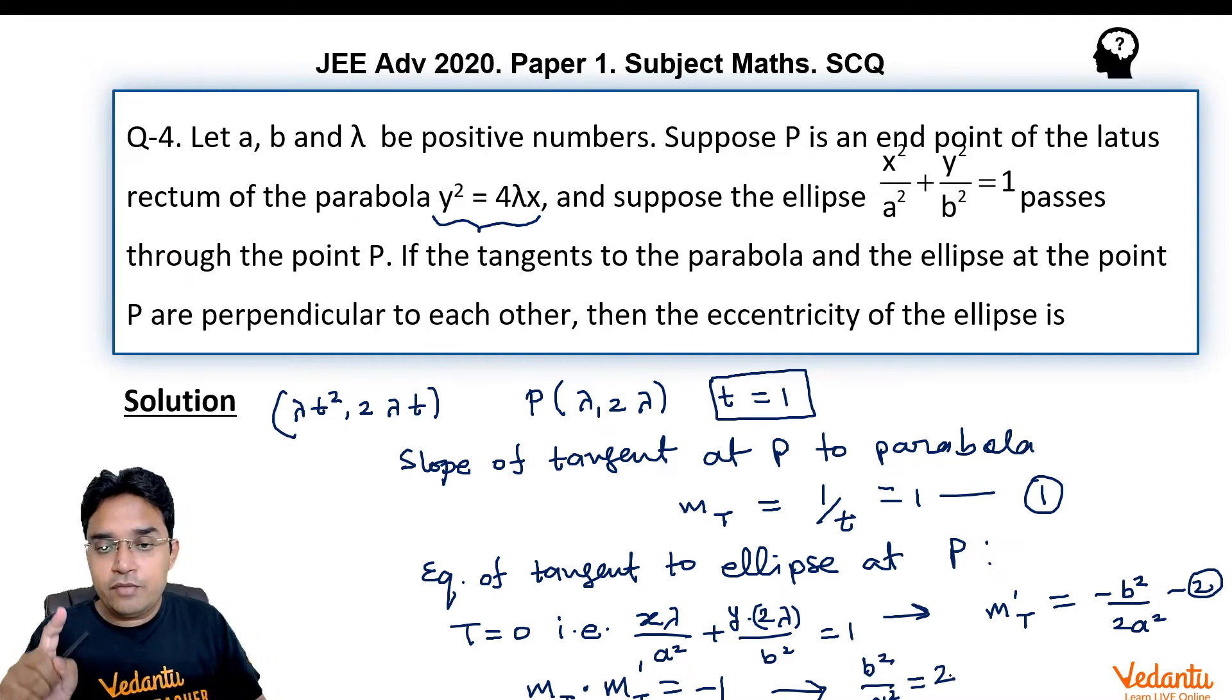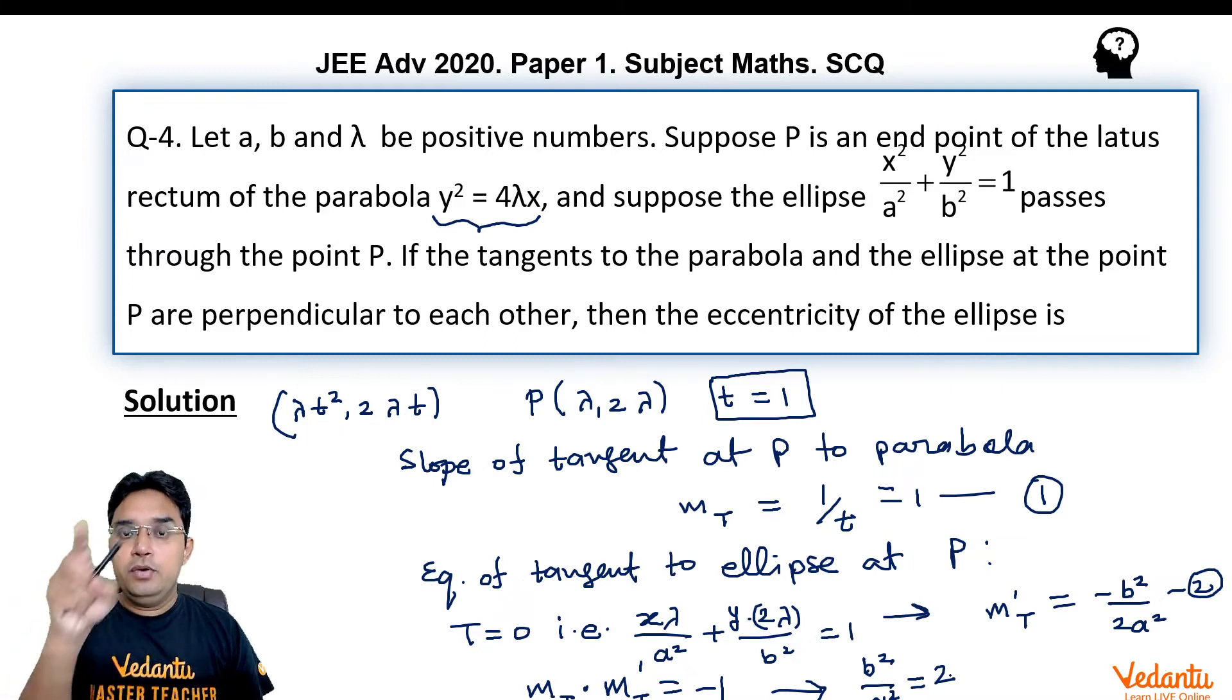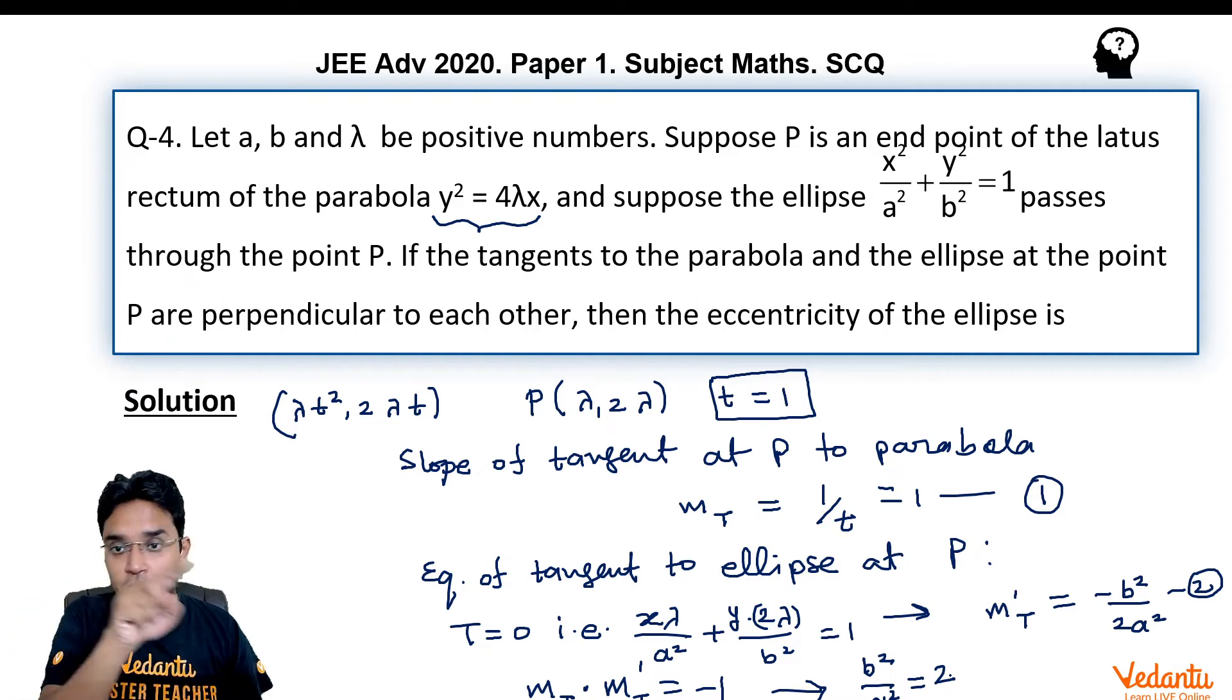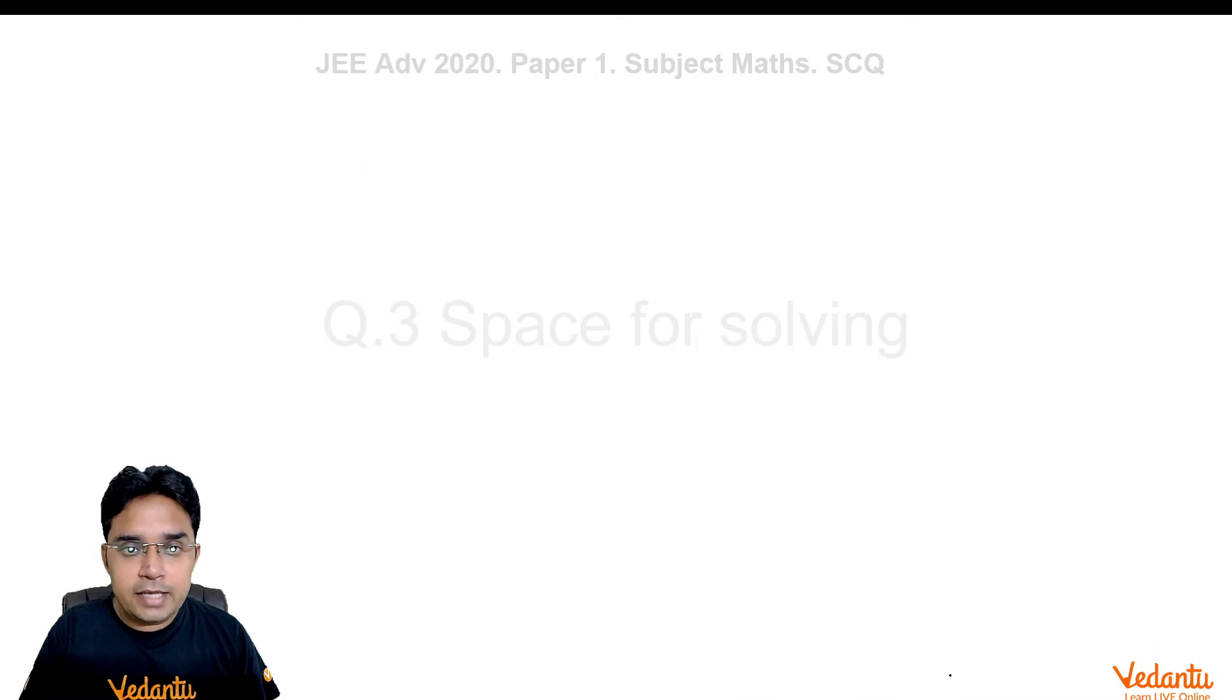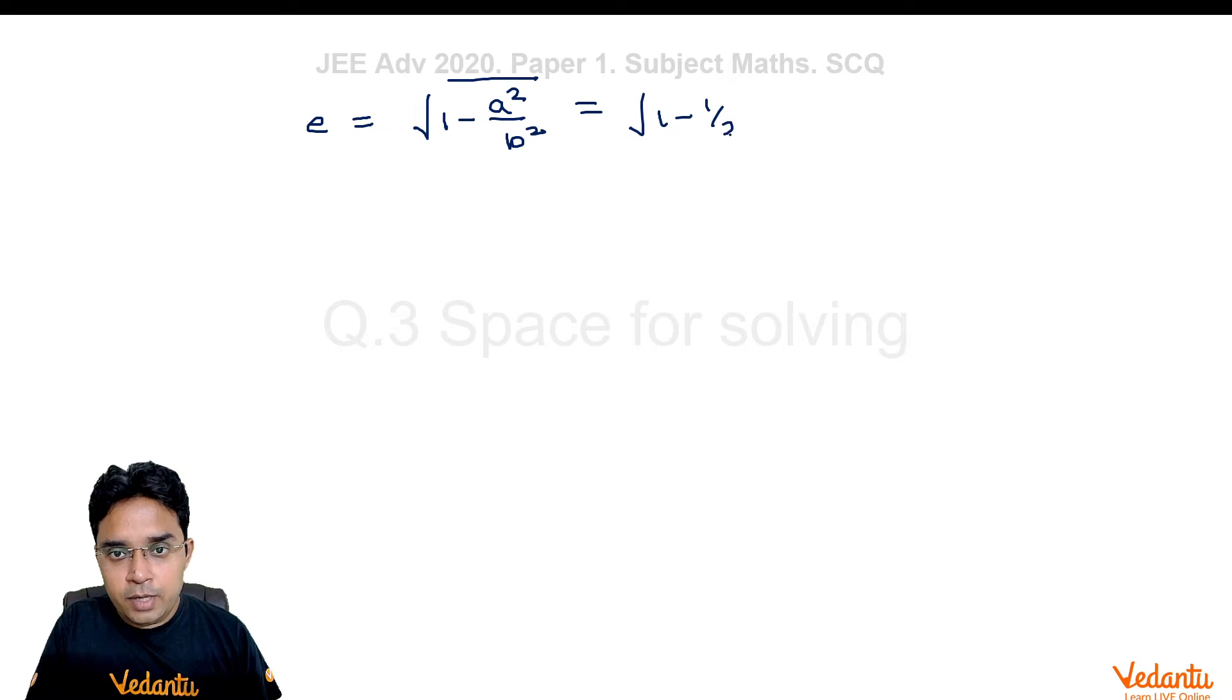This tells you one very important thing that b² is greater than a², that means this ellipse has to be vertical ellipse not horizontal one because the coefficient below y² is more than the coefficient below x². Now, for this the formula for eccentricity is e = √(1 - a²/b²). This will be 1 - 1/2 hence equal to 1/√2.